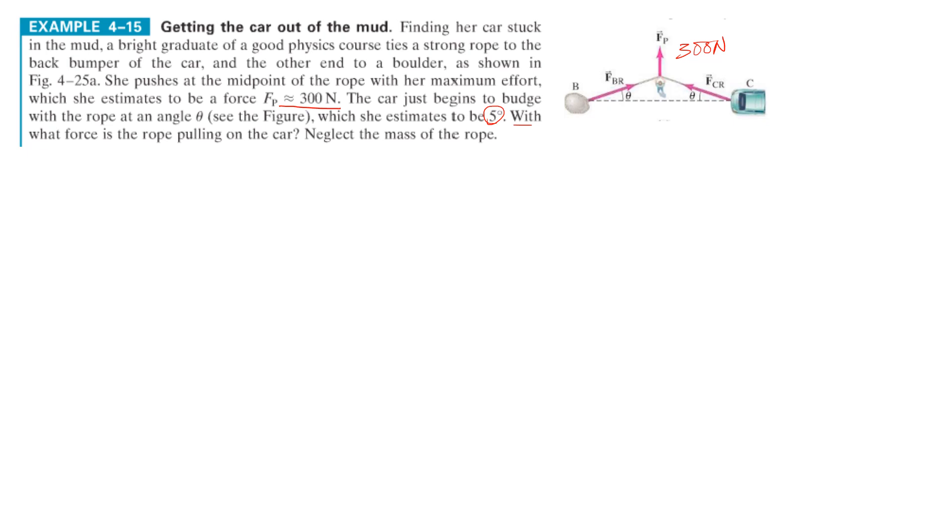The car begins to budge with the rope at an angle shown, right? Which is around five degrees. And then, what is the force of pulling on the car? Meaning, we want to find the tension of the car. All right. Not a lot of info, but let's break it down. Let's start with the free body diagram. F, B, D. So, let's have that point be exactly where she is, right? This is going to be my center of mass for the system. Okay.